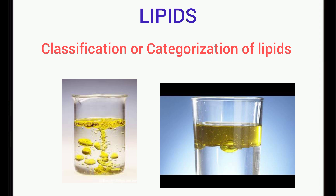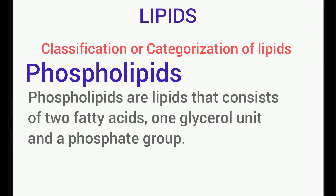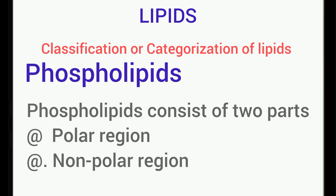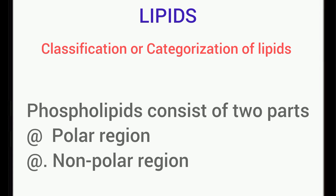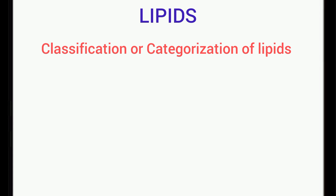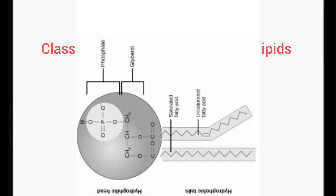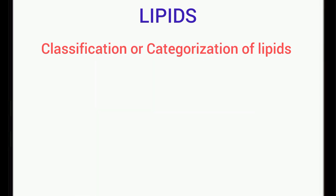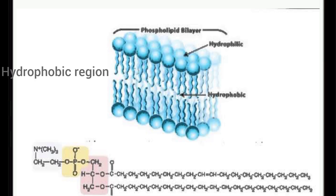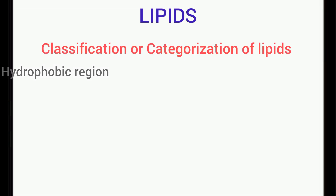The next group is phospholipids. Phospholipids are lipids that consist of two fatty acids, one glycerol unit, and a phosphate group, as you can see from the image being displayed on your screen. Phospholipids are present in the cell membrane of living organisms.